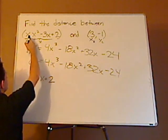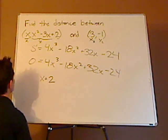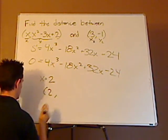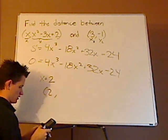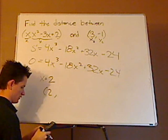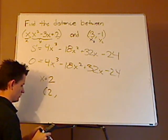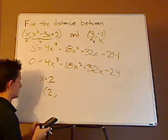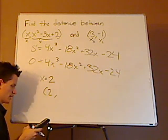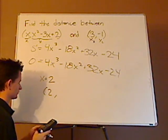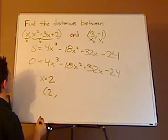Then what you want to do is plug it back into here. Your point is 2, and then you just plug it in. So it'll be 2 squared minus 3 times 2 plus 2, which is 0.